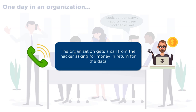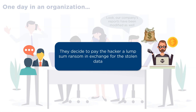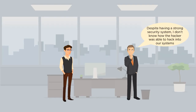The hacker then contacts the organization demanding a ransom to restore the data to its original, trusted state so the organization can use it for business transactions. The organization, having no backup, decides to pay the lump sum to the hacker to restore the data and continue business as usual. This is a hacker leveraging the misconfiguration and weaknesses in the organization's security to make ransomware demands.